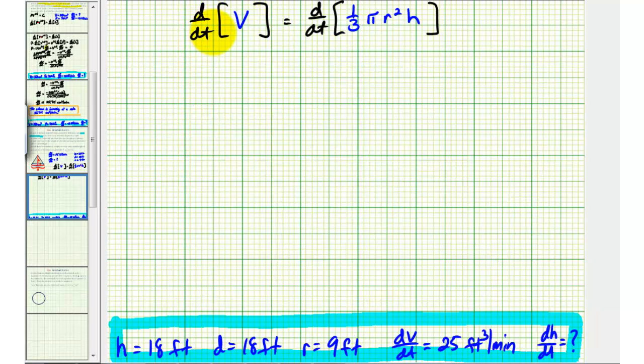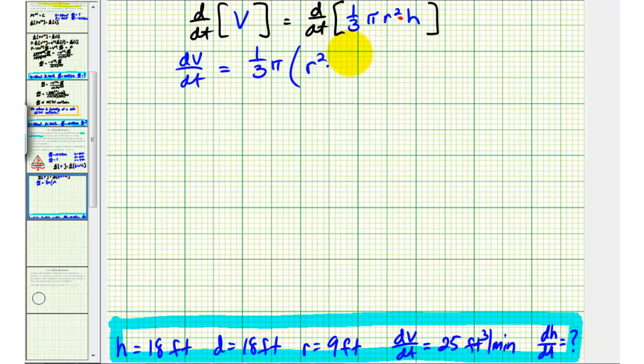The derivative of V with respect to t would be one times dV/dt, or just dV/dt, equals on the right side, the derivative of one-third pi r squared h with respect to t would be one-third pi times the derivative of r squared times h. So we're going to apply the product rule here. So we'll have the first function, r squared, times the derivative of the second function with respect to t.